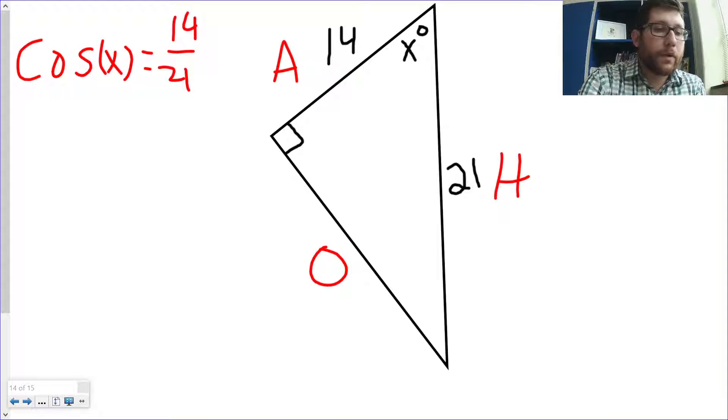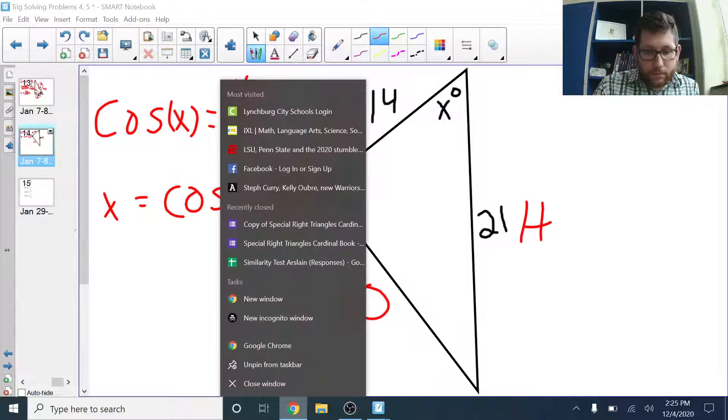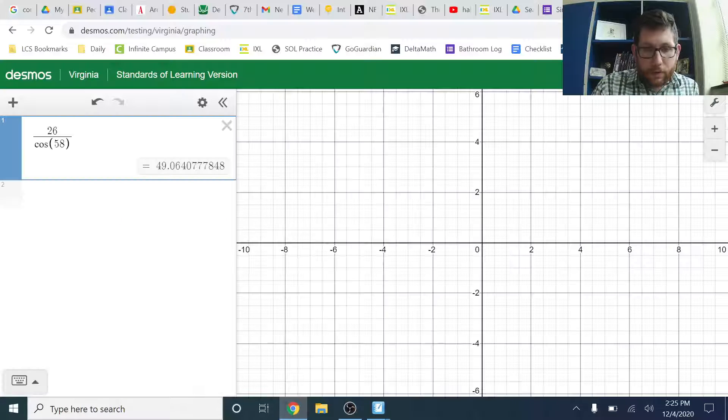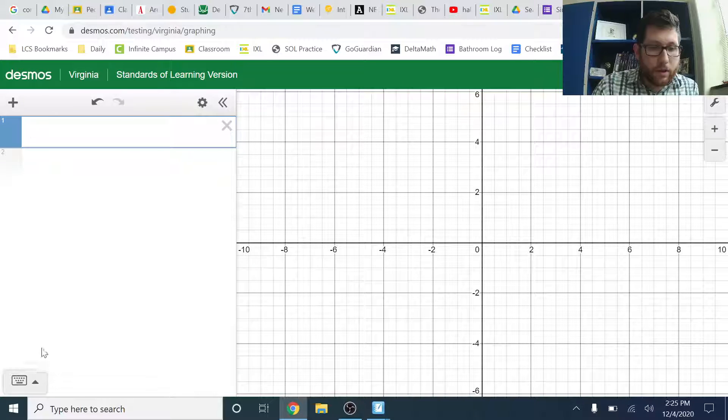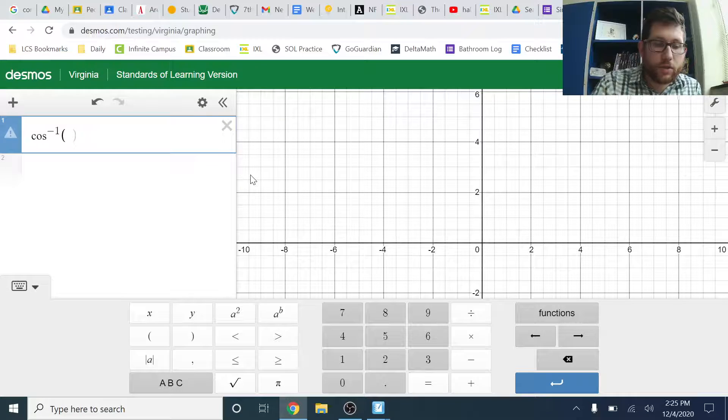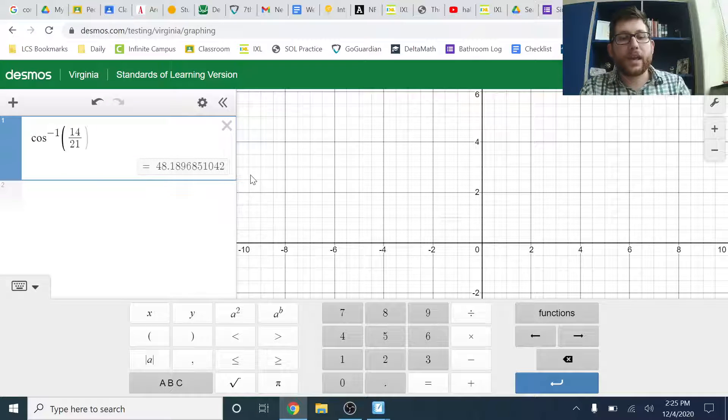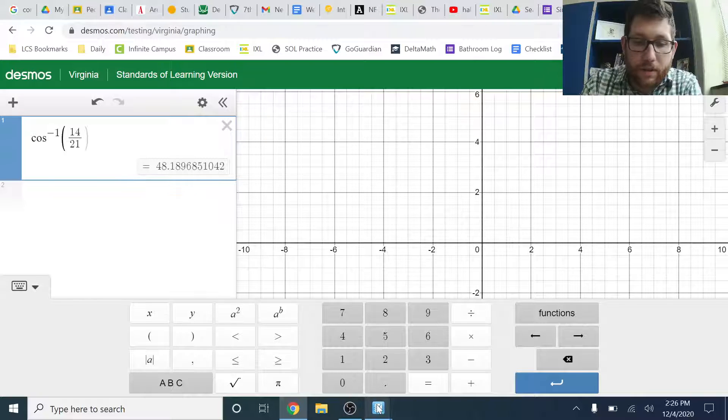All right. And, like before, we're going to do the inverse cosine on both sides. So, cosine to the negative 1, 14 over 21. If you try to use regular cosine on this, it's not going to work. So, you have to go second cosine on your calculator or on Desmos. What we're going to do, pull up Desmos. We're going to go into our functions. So, we hit our little keyboard. Go to functions. Cosine inverse. 14 over 21. And I have 48.18 or 48.2.